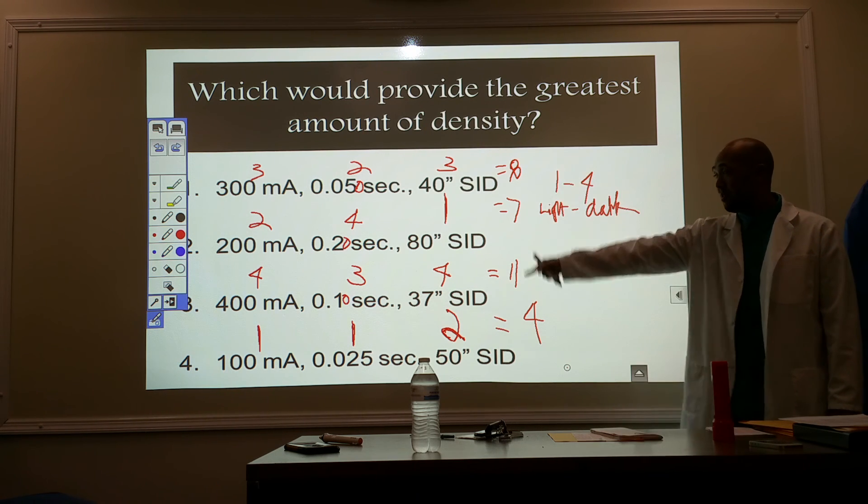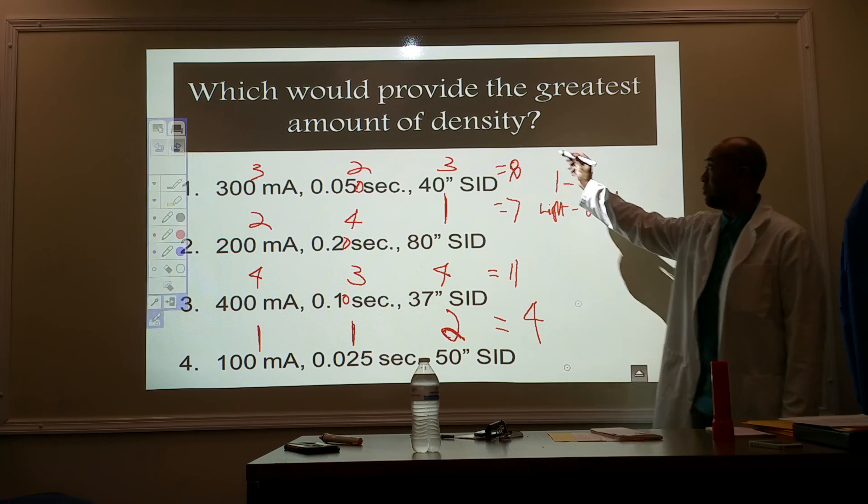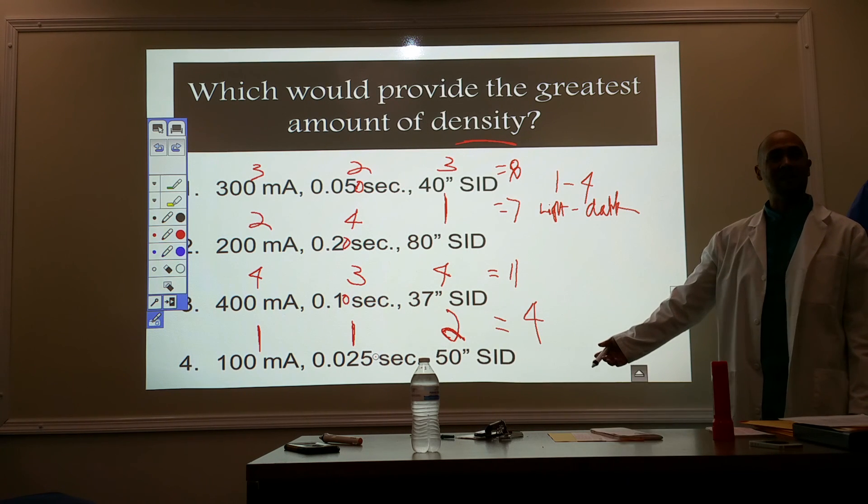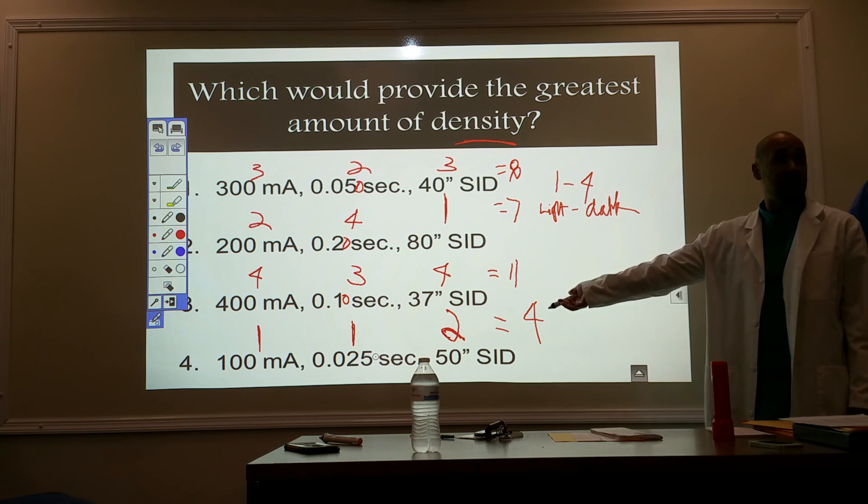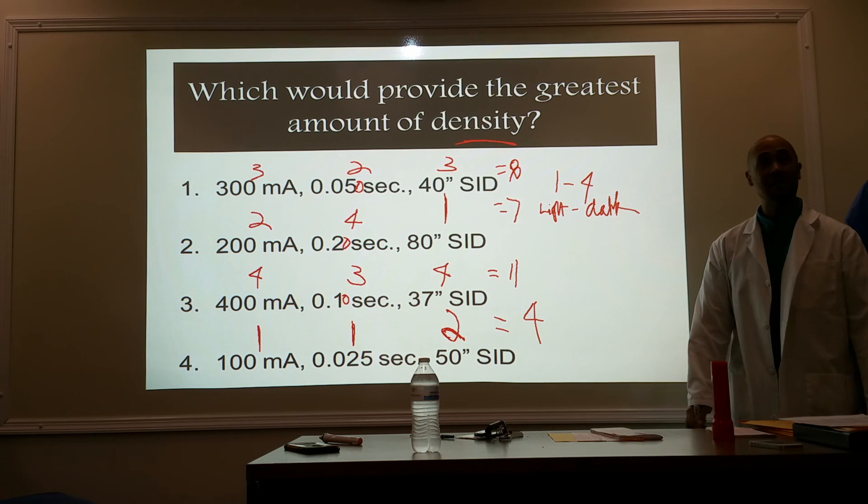So, 400 mA, 0.1 seconds, 37 SID is going to give us the most density. Now, what if my question said the least amount of density? Number four. After we figured it out, we should be able to know which one it is now, right? So, yes. Number four is going to give us the least amount of density. Read the questions closely.